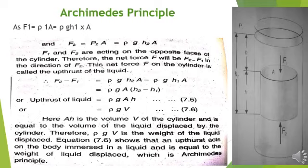Here, V is the volume of the cylinder, which equals the volume of the liquid displaced by the cylinder. ρgV therefore represents the weight of the liquid the cylinder displaces. Hence we conclude that the upthrust force acting on a body immersed in a liquid is equal to the weight of the liquid it displaces — which is the Archimedes' Principle.